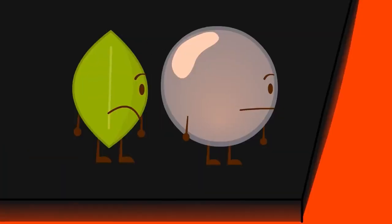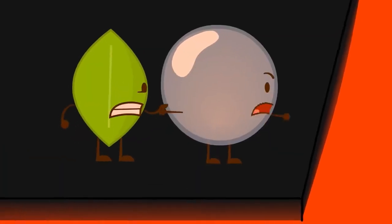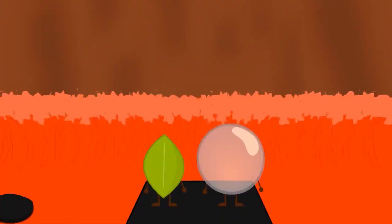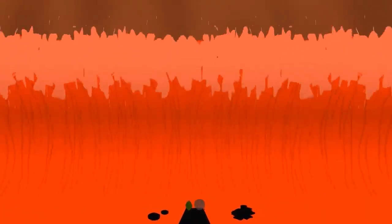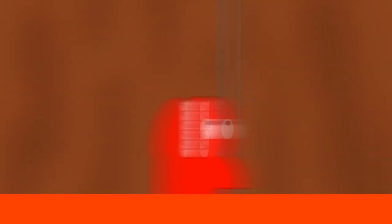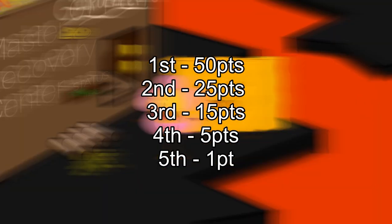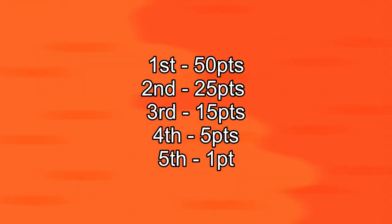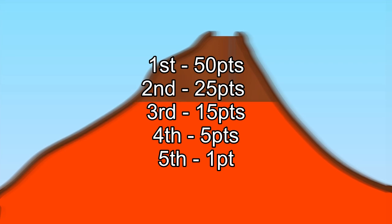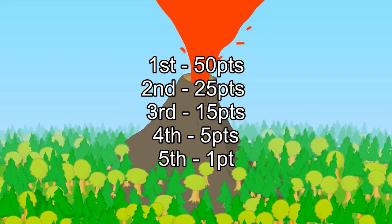Anyways, next challenge is the volcano challenge. First Fiery would beat the challenge even though the volcano erupted. So I guess he is the safe one. Since there's only 5 contestants left. If you're first you get 50 points. If you're second 25. Third is 15. Fourth is 5 and 5th is 1.